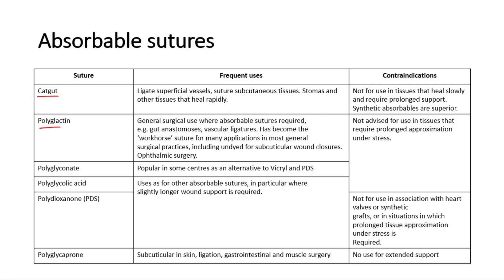Polyglactin has become the workhorse suture for many applications in most general surgical practices, including undyed for subcuticular wound closures. It is also used in ophthalmic surgery. Third is polyglyconate, sometimes used as an alternative to vicryl and polydioxinone. Polyglycoprone is used for subcuticular suture in skin, gastrointestinal, and muscle surgery.